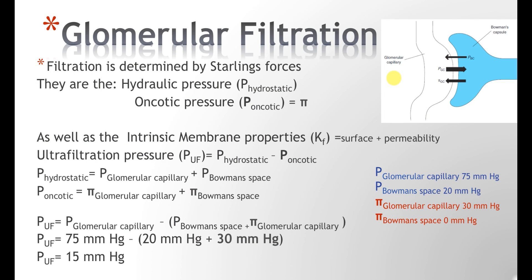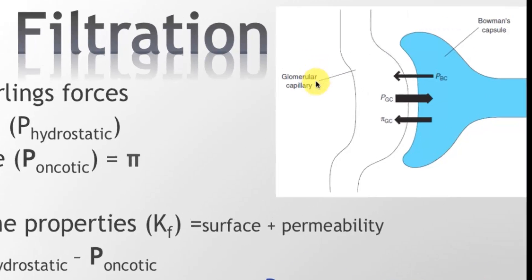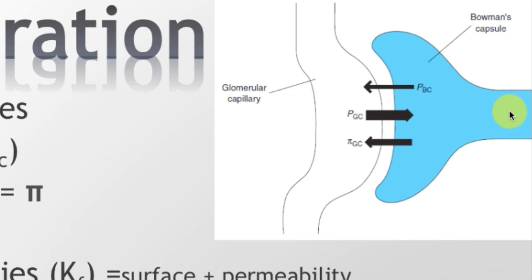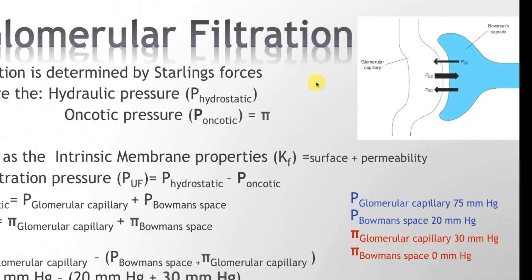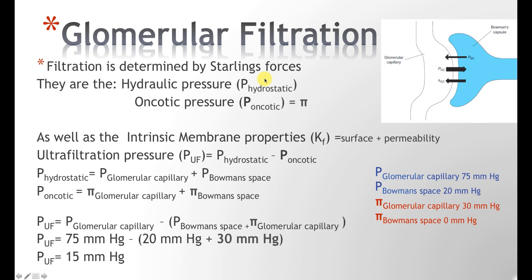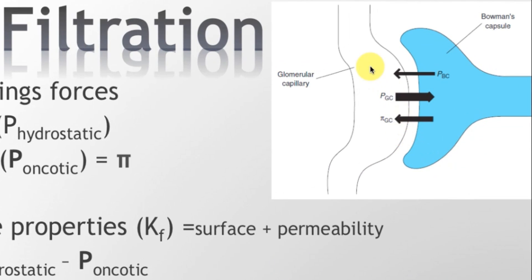One thing that determines glomerular filtration is the Starling forces — forces that drive the filtrate toward or hinder filtration. There are two types: hydraulic or hydrostatic pressure, which is pressure caused by fluids, and oncotic pressure. Oncotic pressure exists because proteins in the glomerular capillaries are osmotically active and want to hold on to fluid — so this is a negative pressure, while hydrostatic pressure is a positive pressure.